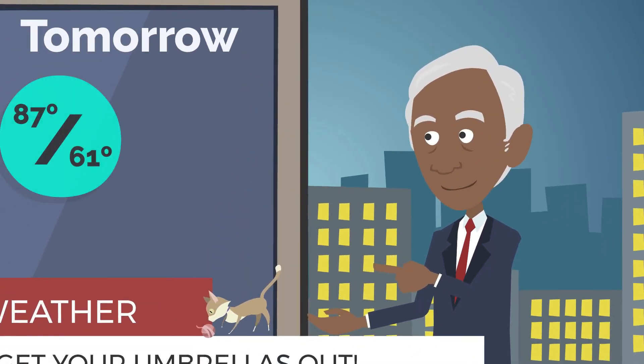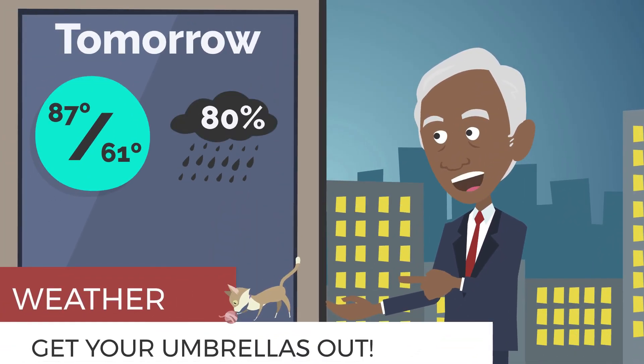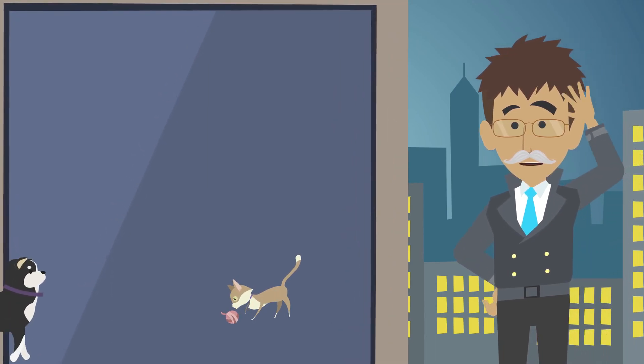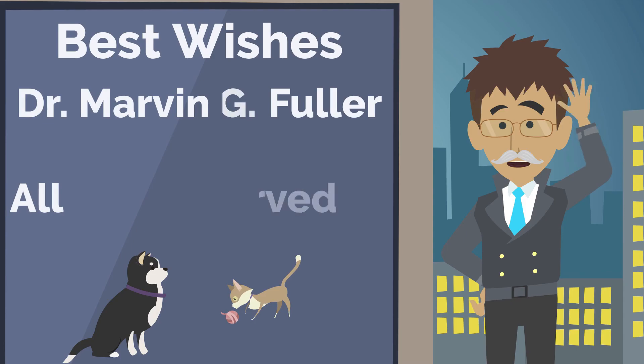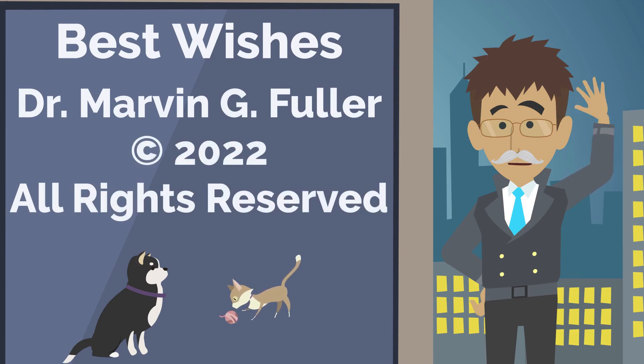And, of course, we hear about the probability of precipitation on the daily weather forecast. Probability is a powerful tool that allows us to make predictions about many things in the world around us.